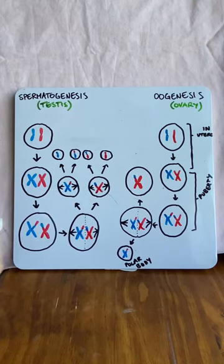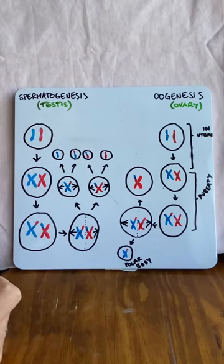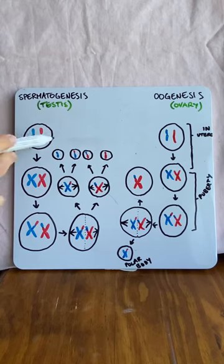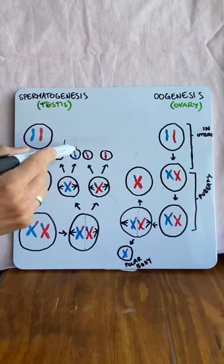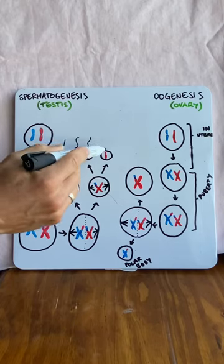And what we end up with are four cells that contain only one copy of each chromosome. We begin with two copies, finish with one. This is called a diploid cell. This is called a haploid cell. In the epididymis, these all grow a little tail and form mature sperm cells.